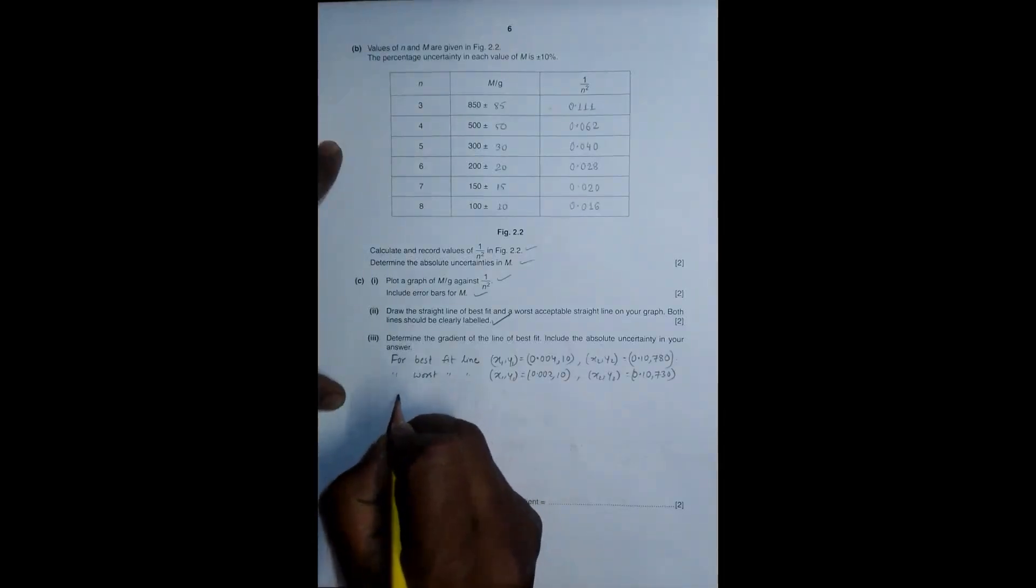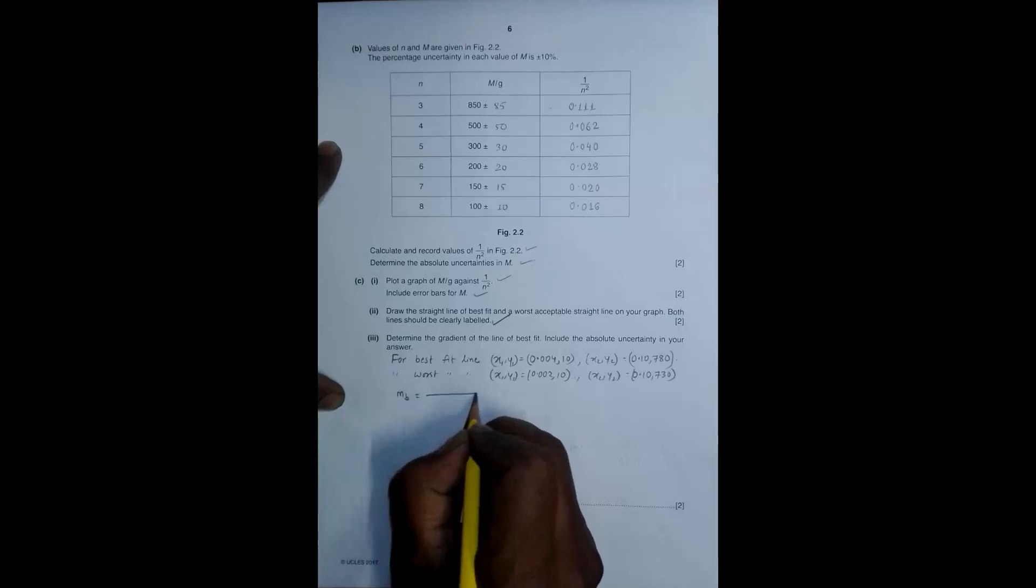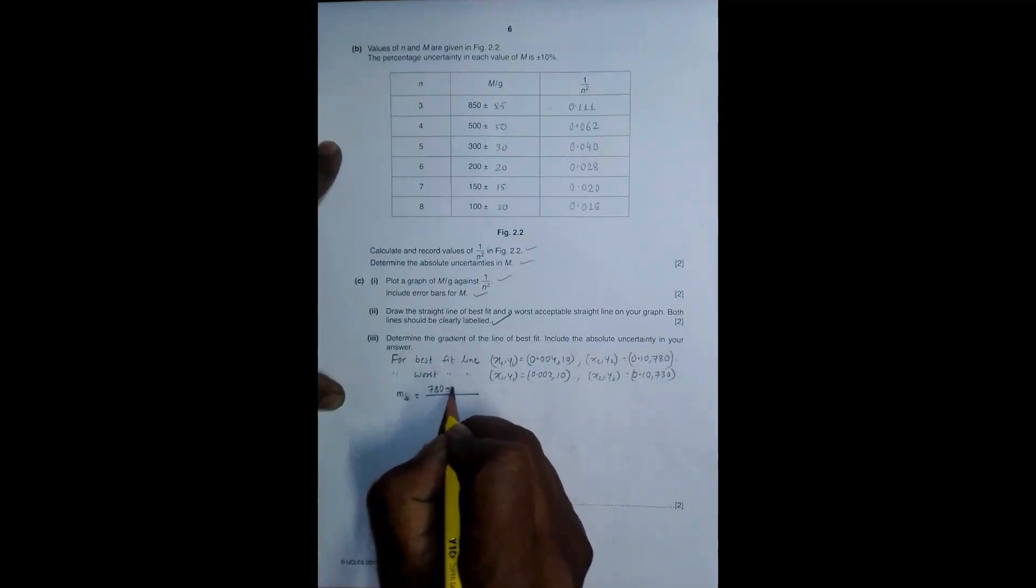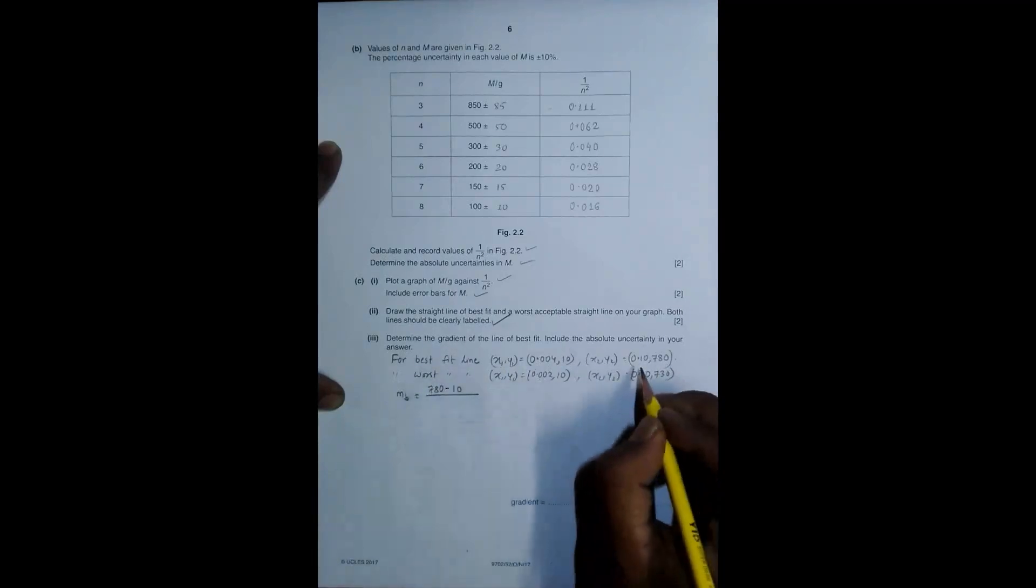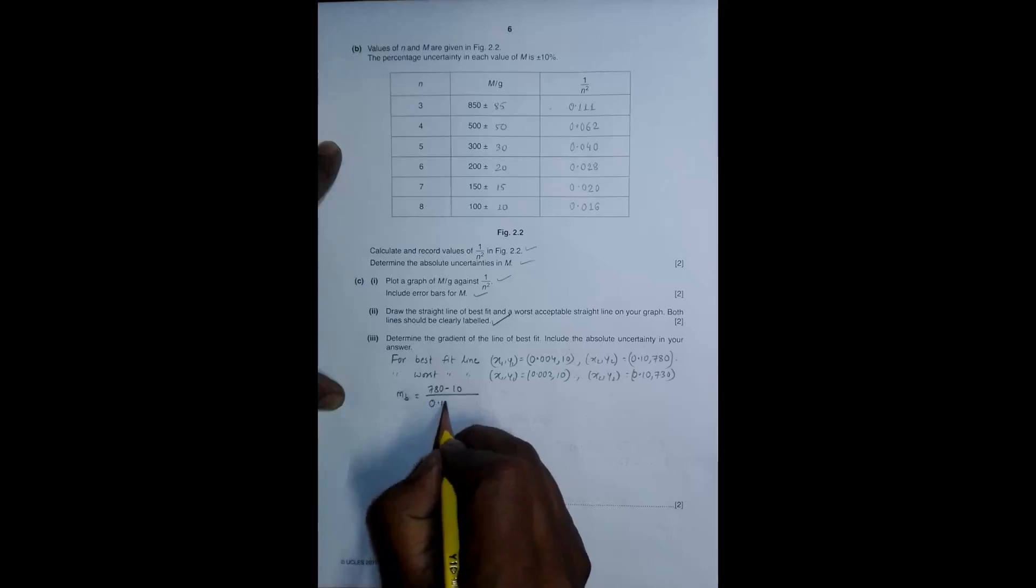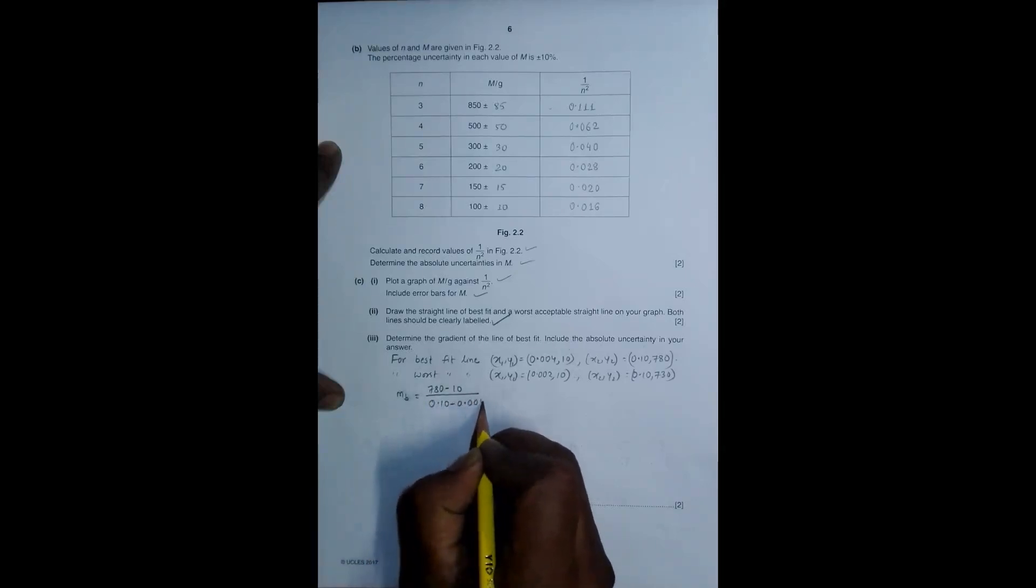Our task is to find the gradient. Let me go for the best gradient of the best fit line. M best is equal to, for it, this is y2 minus y1. So it should be equal to 780 minus 10 by x2 minus x1, which is 0.10 minus 0.004.